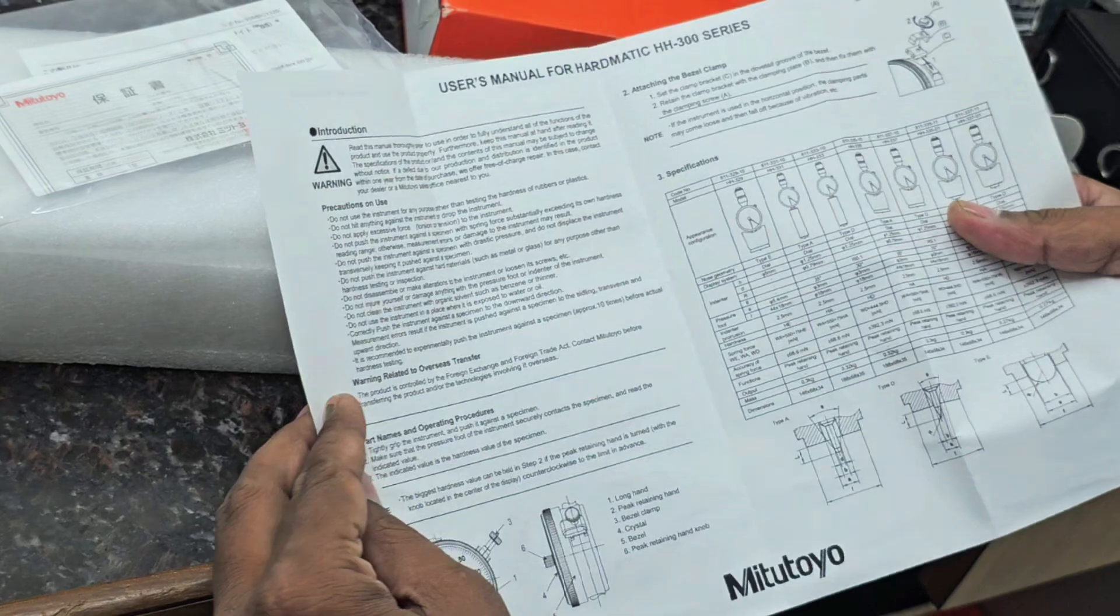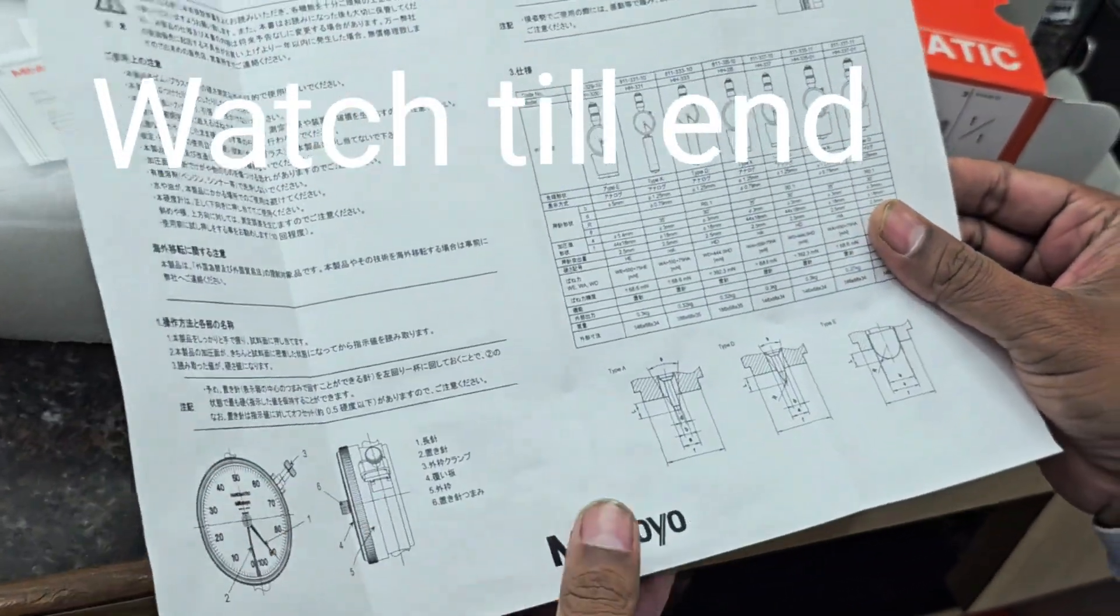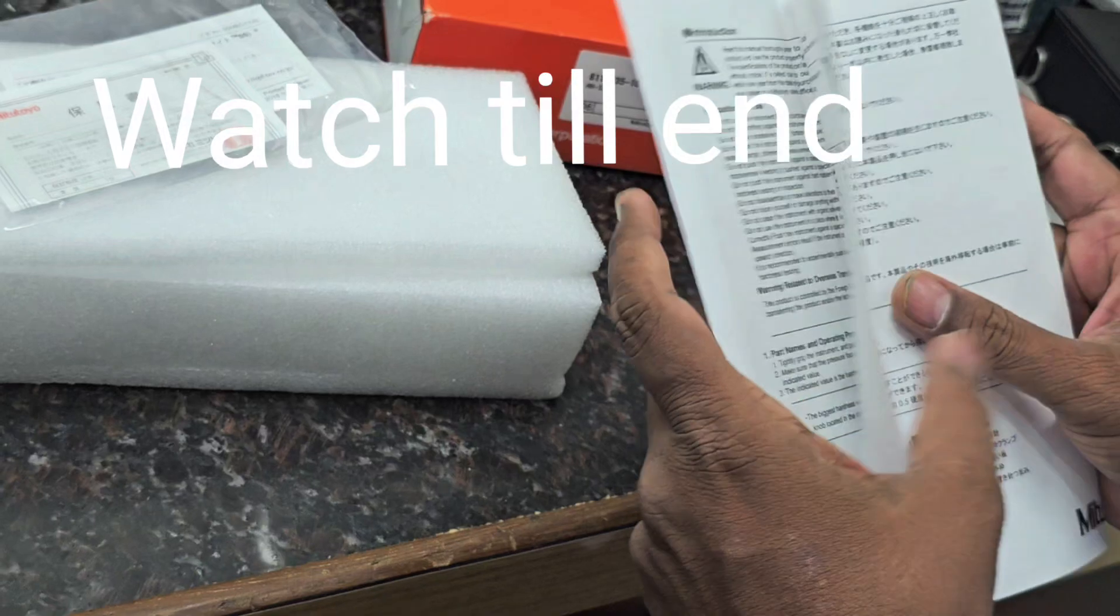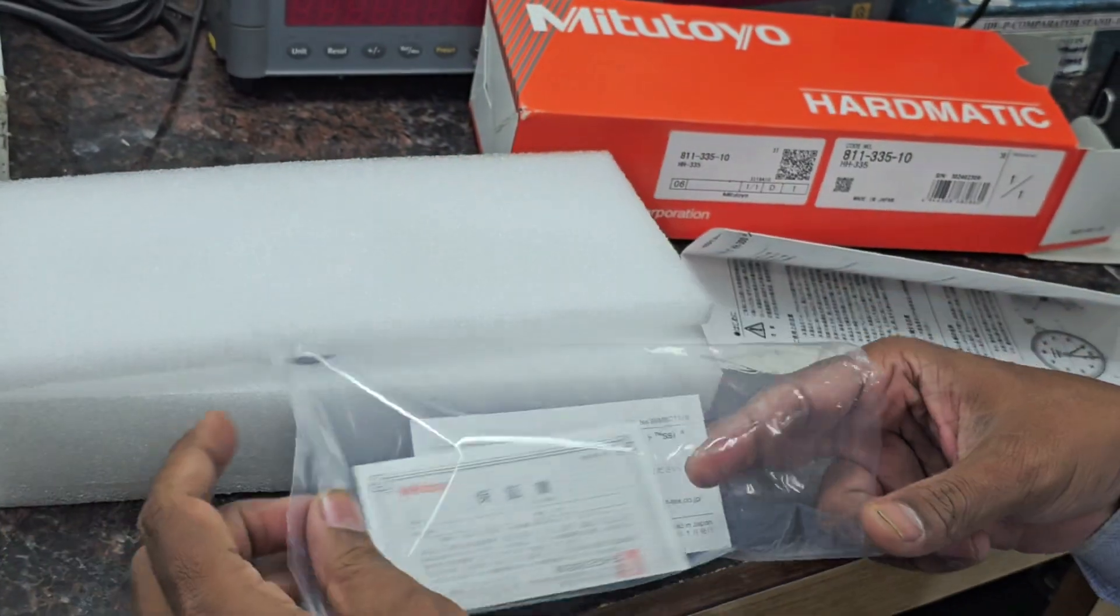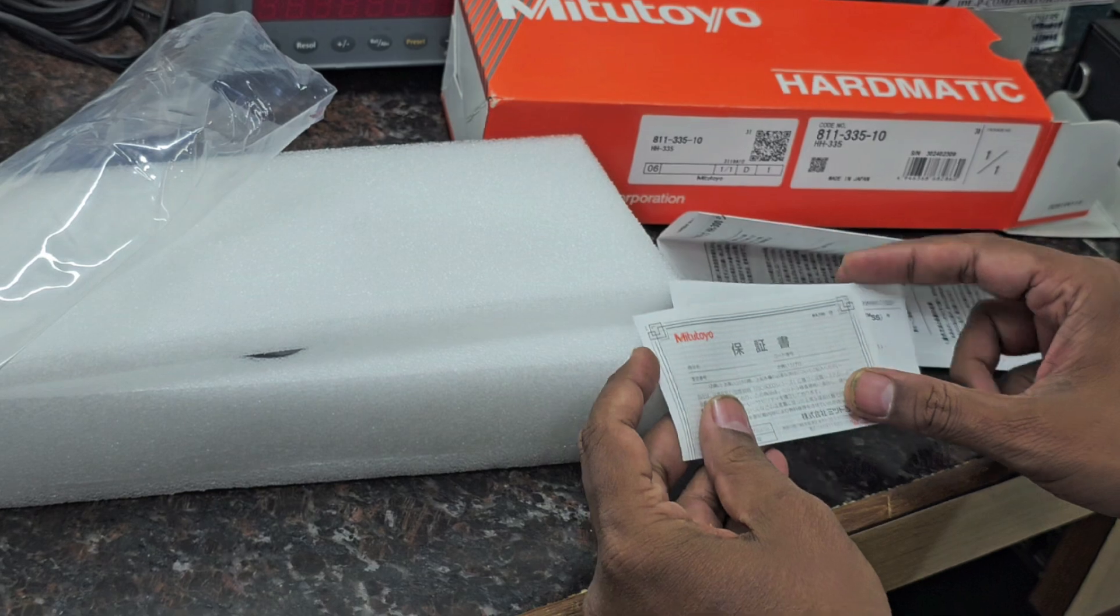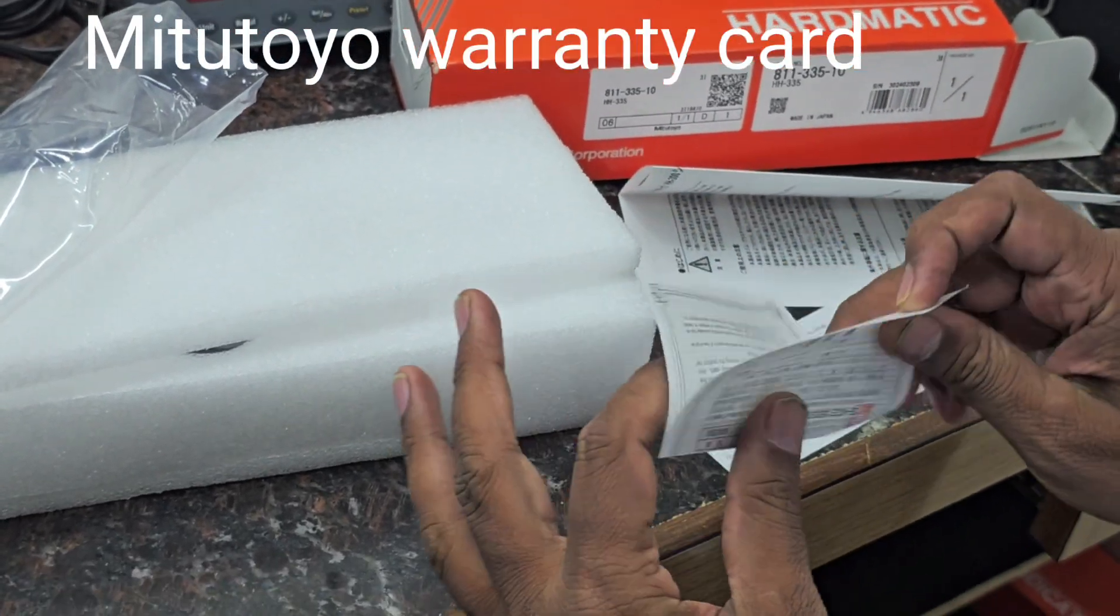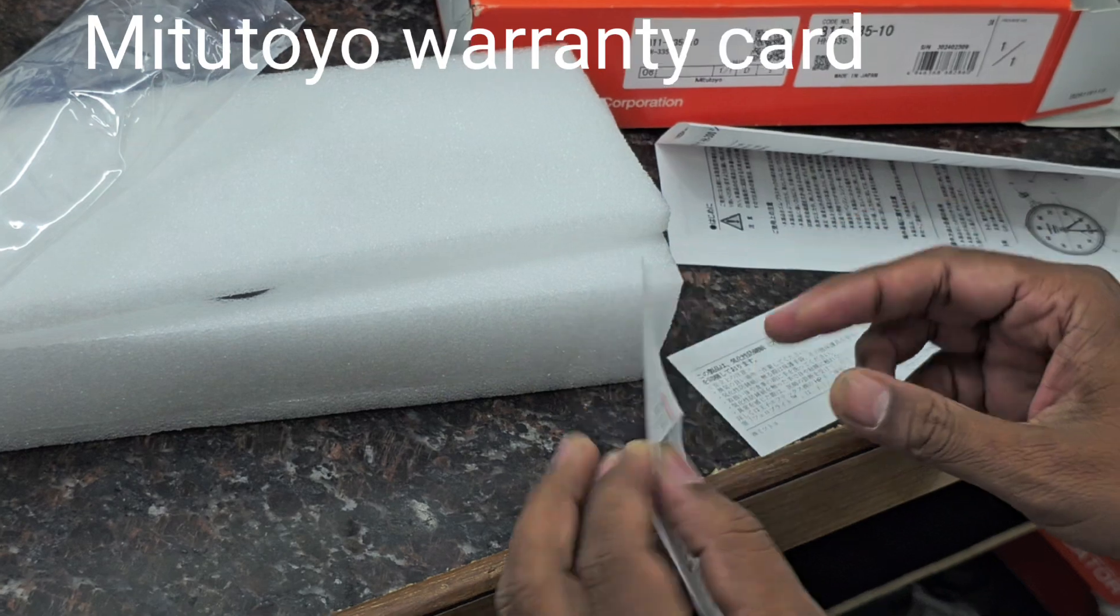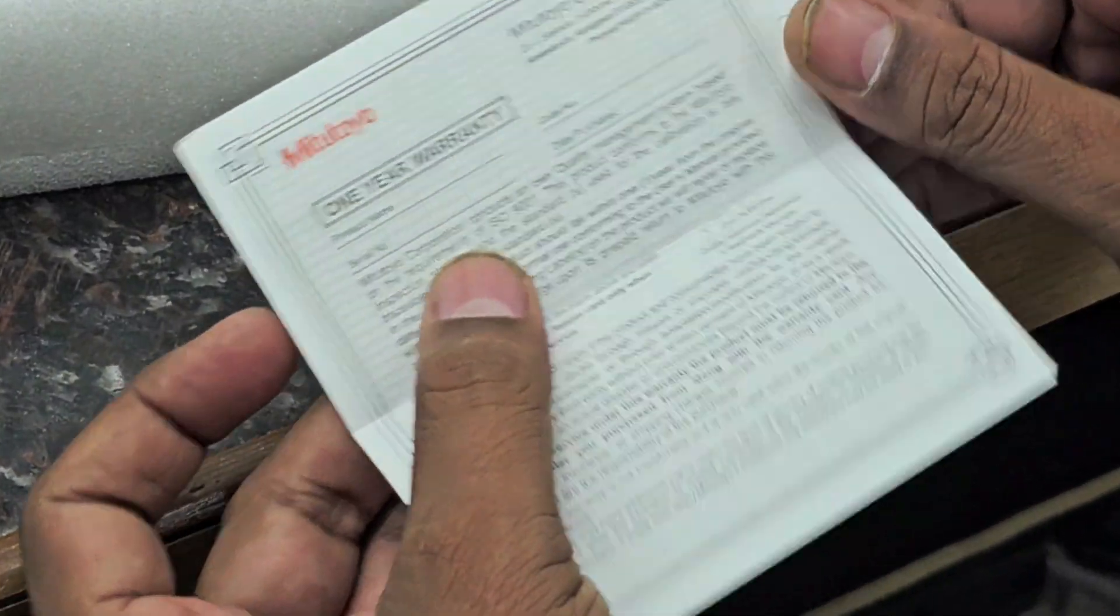This documentation is available in English and in Japanese language. There's a one-year warranty card inside. It is the Mitutoyo warranty card, available in both Japanese and English language.